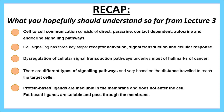Let's have a recap on last week's lesson. From Lecture 3, you should understand that cell-to-cell communication consists of direct, paracrine, contact-dependent, autocrine and endocrine signal-linked pathways. Cell signaling has three key steps: receptor activation, signal transduction and cellular response. This regulation of cellular signal transduction pathways underlies most of the hallmarks of cancer, and signaling pathways vary based on the distance travelled to reach the target cells.